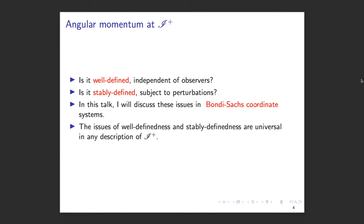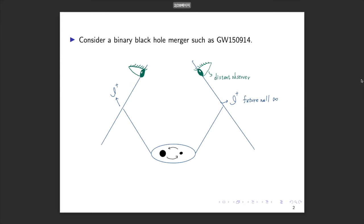What is the criterion for a good definition? These two black holes are rotating, so there must be angular momentum. At the end they merge into a single rotating black hole — there should be another angular momentum. I'd like to propose two criteria. First, it should be well-defined — as mathematicians, we want to make sure it is defined independently of observers. You may have different observers looking at the system, but the angular momentum should be a concept independent of whichever observer it is.